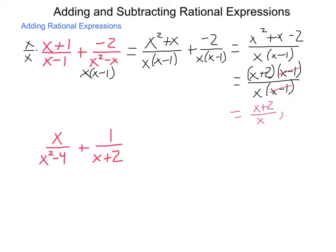With the restrictions that x cannot equal 1 and x cannot equal 0. We have now added two rational expressions and come up with a final simplified form. A lot of steps going on here — a lot of things to keep track of — so let's do another one.